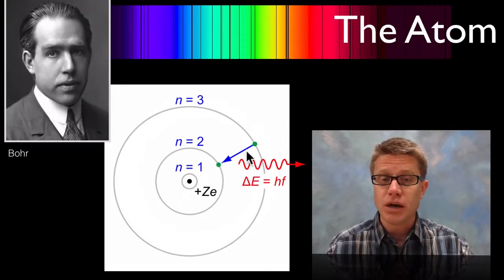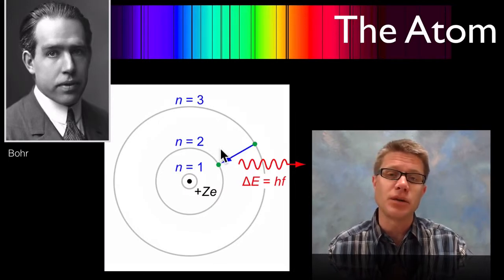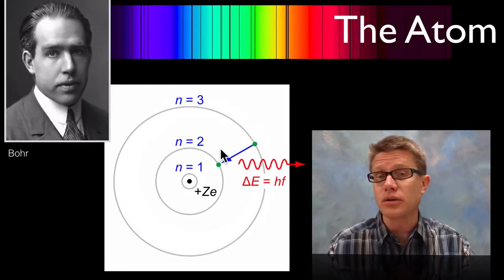And so an electron can be in energy level 1, energy level 2, energy level 3. But it can never be found in the middle. It is quantized. It has to be in one of those levels or another level.